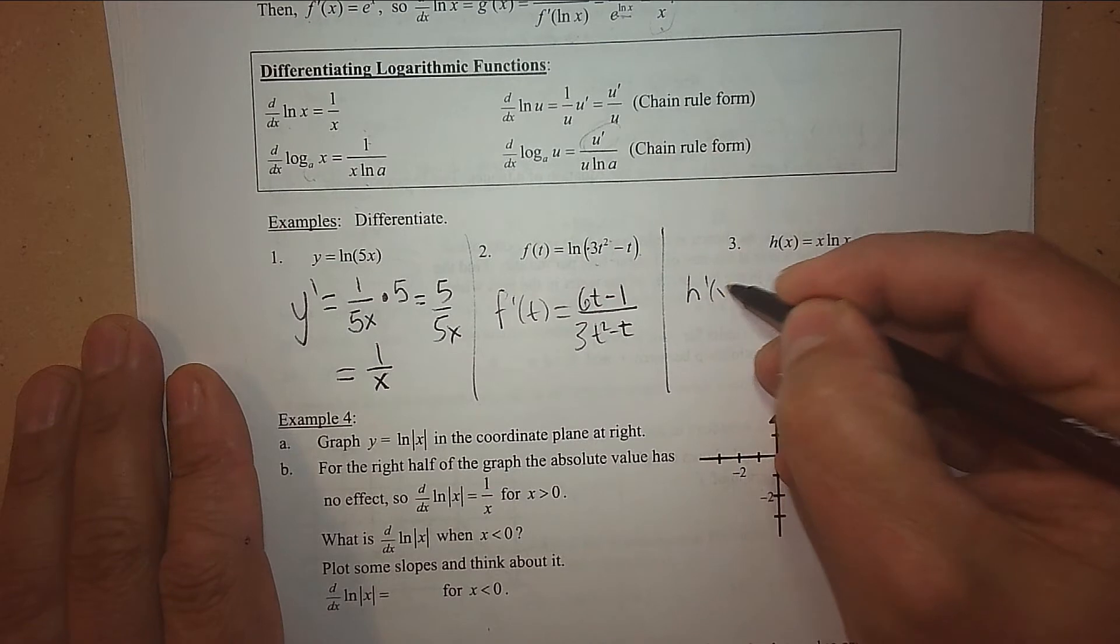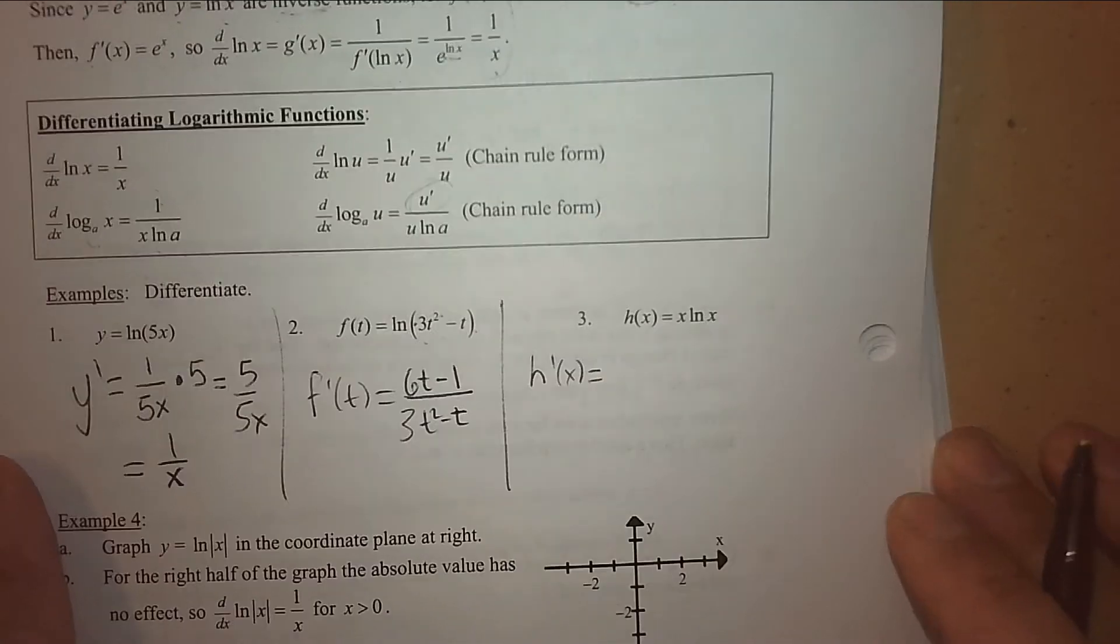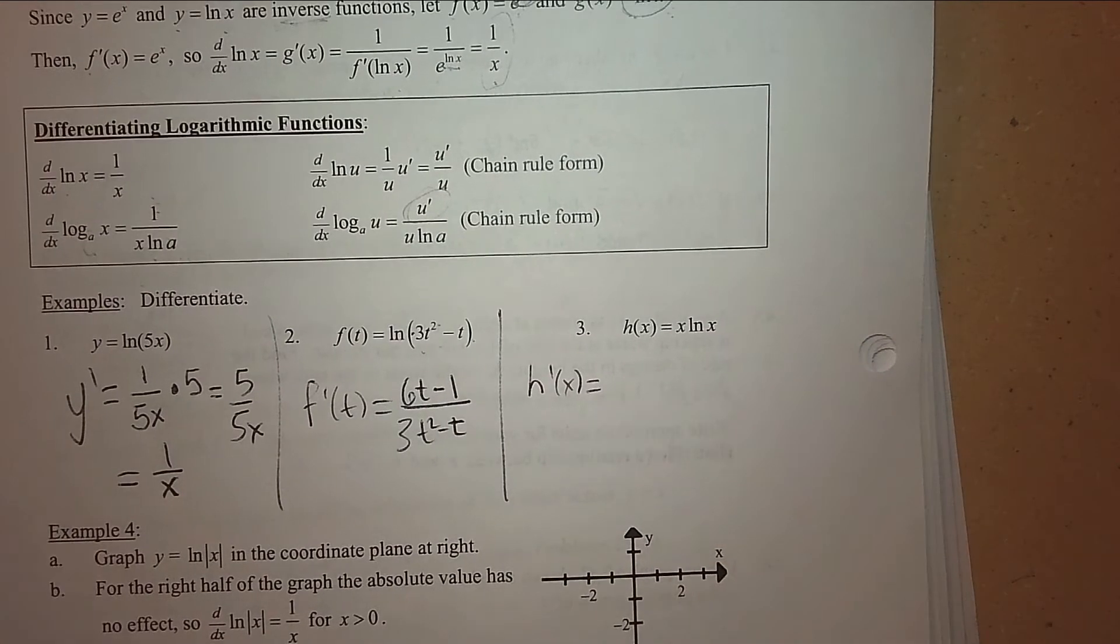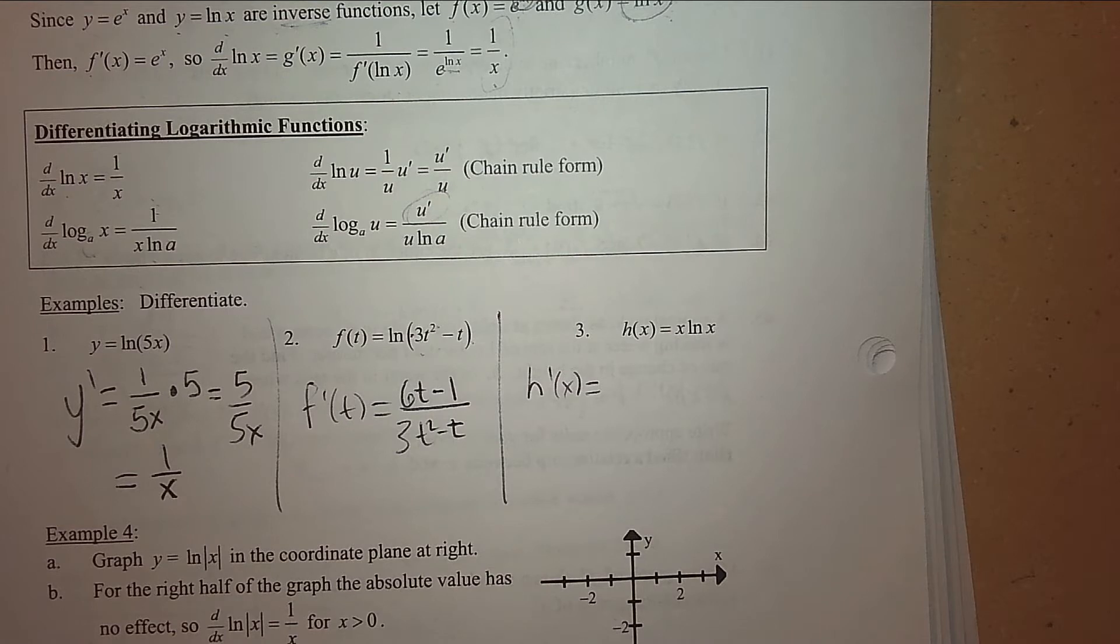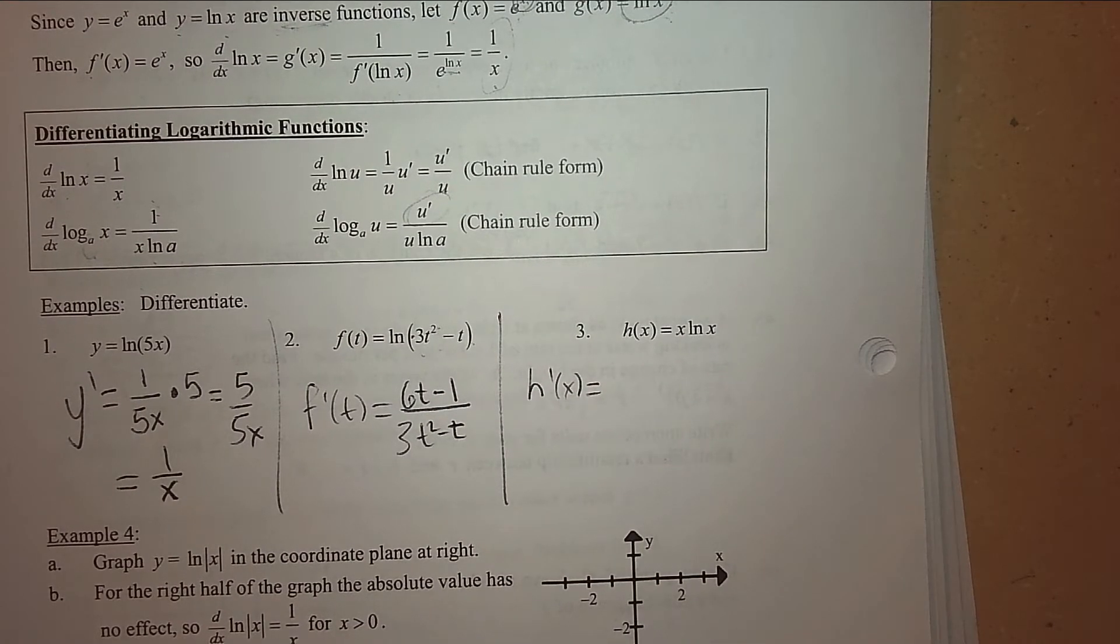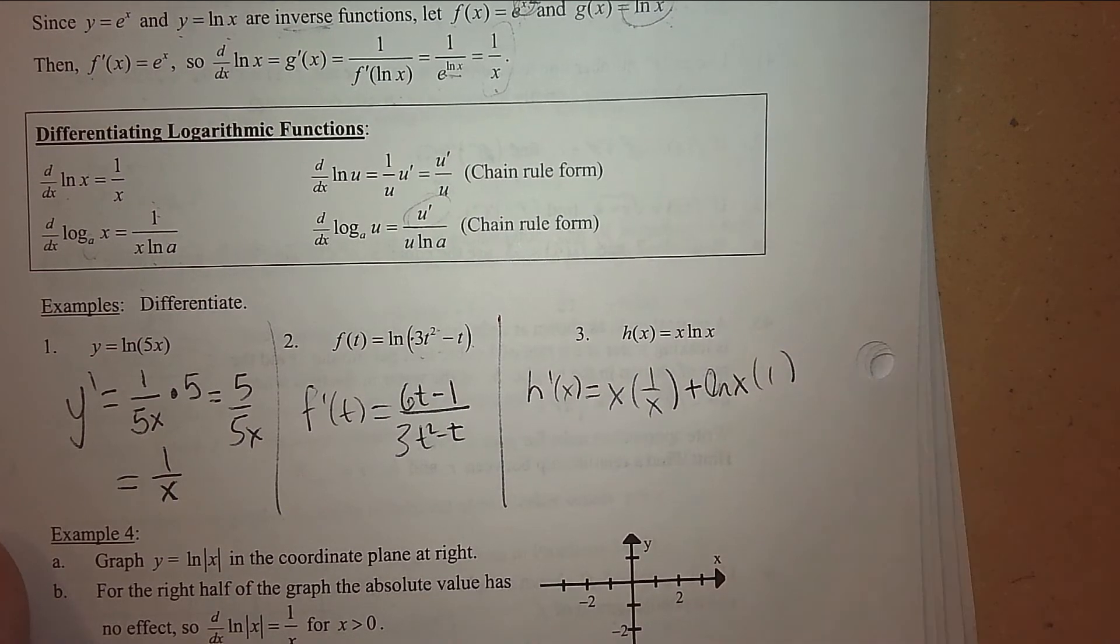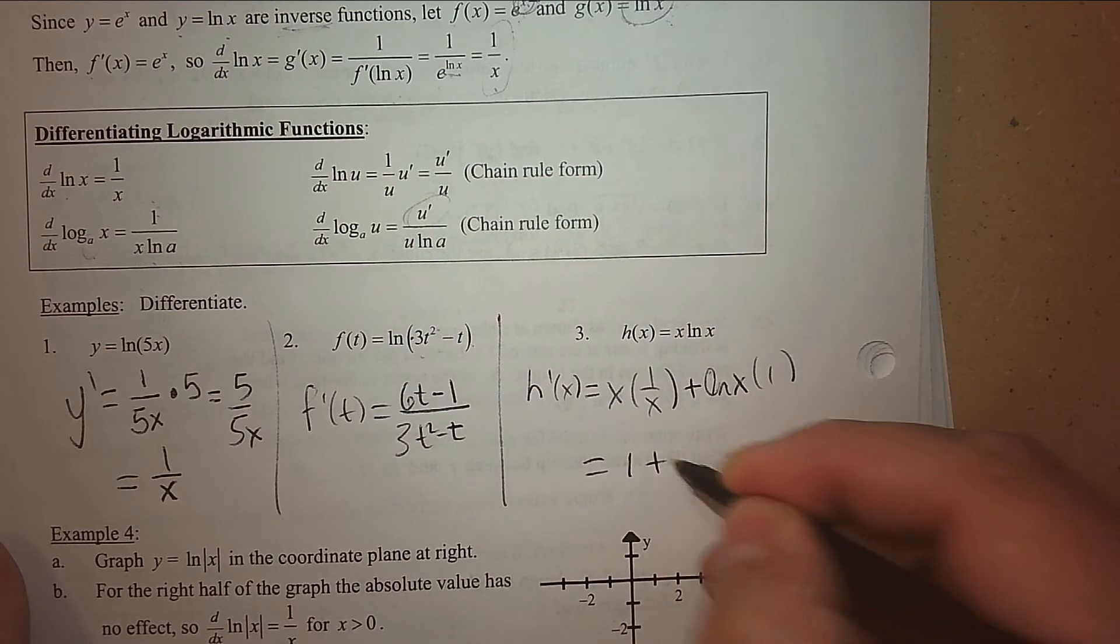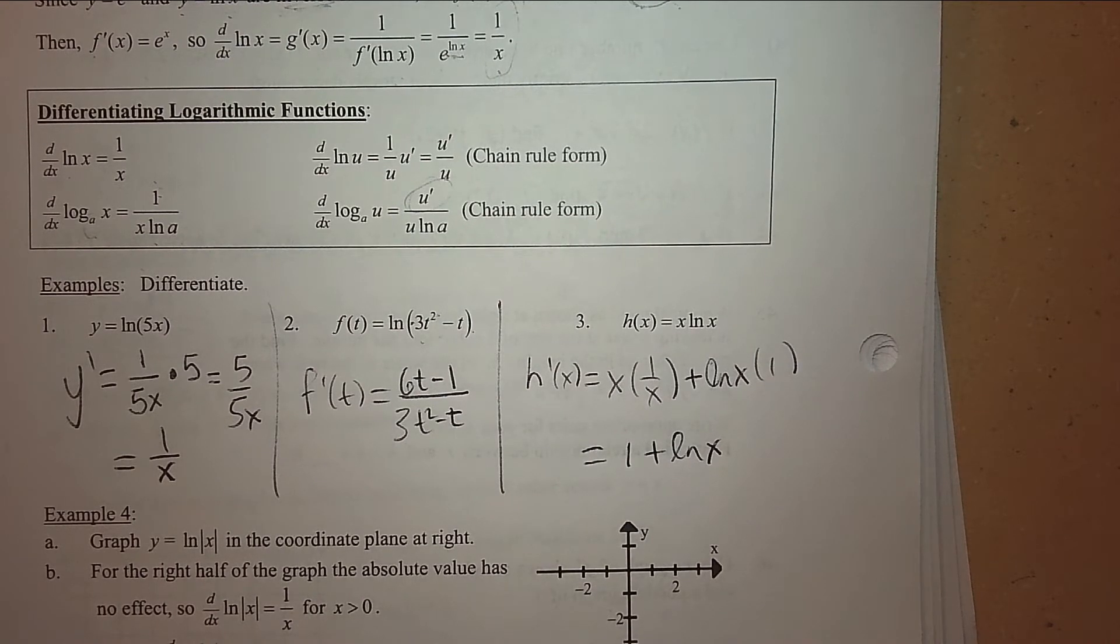What's the derivative here? x times ln(x). How do I take the derivative? You have two things multiplying. That's the product rule. What is the product rule? First times the derivative of the second plus the second times the derivative of the first. And then we can simplify this. The answer is 1 + ln(x). We practice simplifying for multiple choice questions.